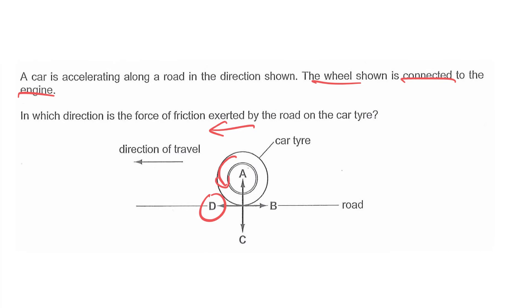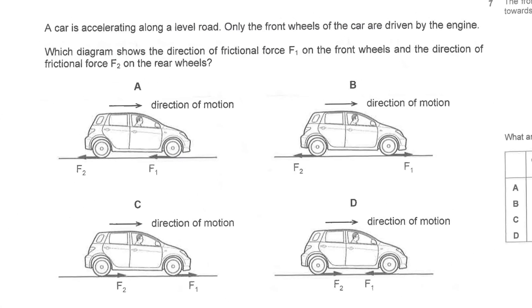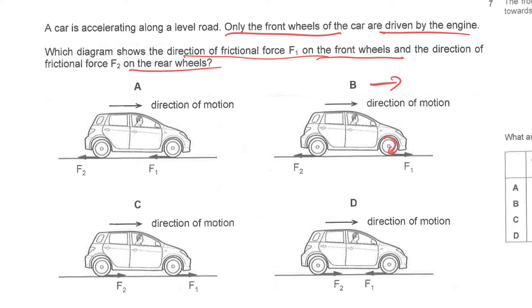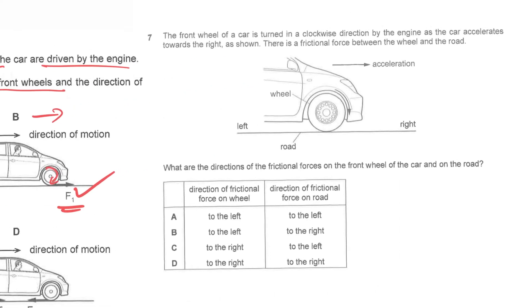Next, you are given four options. Only the front wheels of the car are driven by the engine. The question asks for the direction of the frictional force on the front wheel and also on the rear wheels. The car is moving to the right, so both wheels rotate clockwise. The front wheel is connected to the engine, so friction is forward to the right — that's the thrust. The rear wheels are just rolling along, so the frictional force on the rear wheels is to the left — that's the drag force.